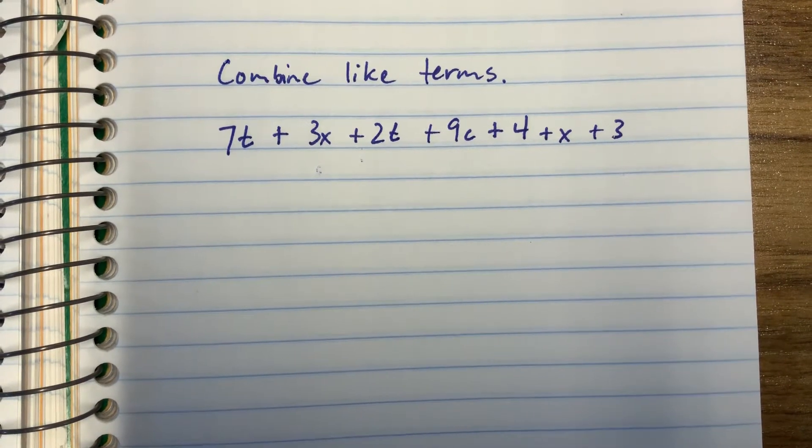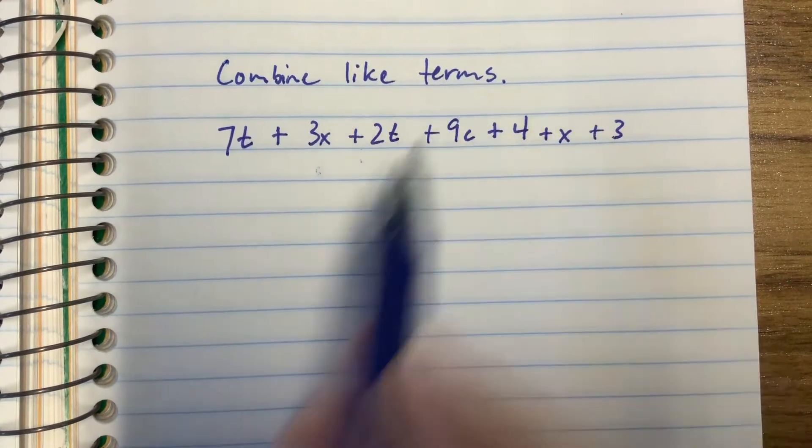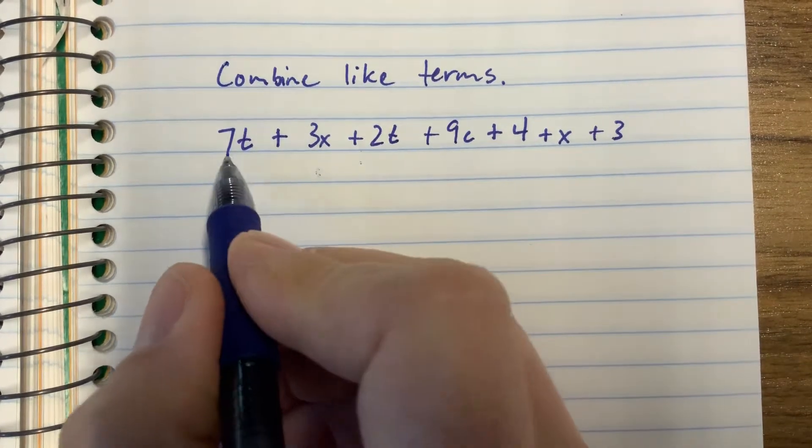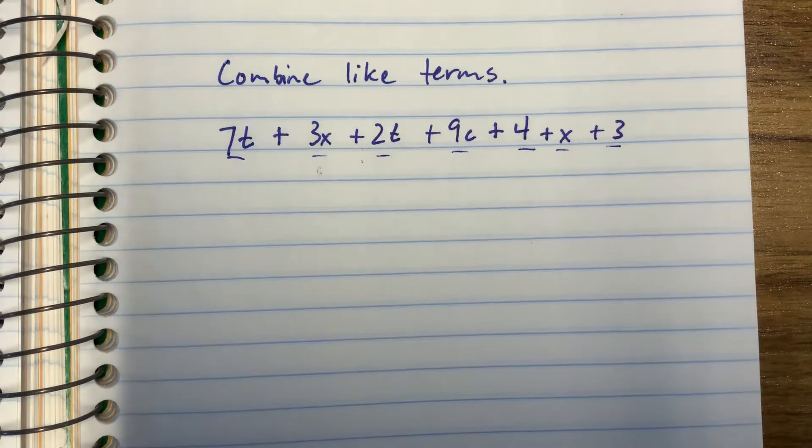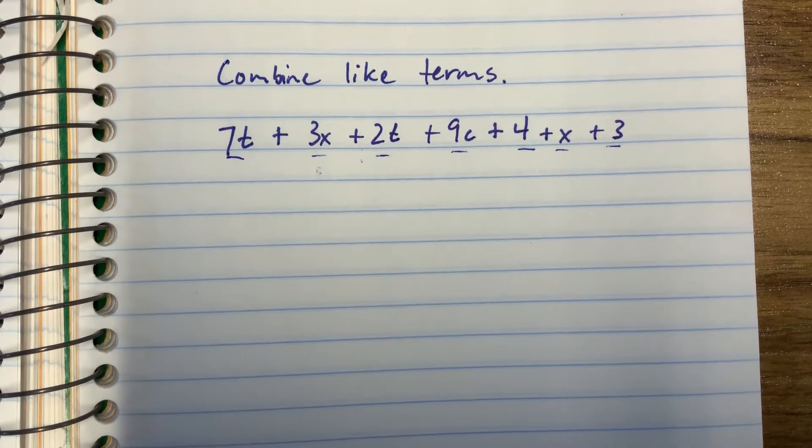All right, we have a lot of terms to combine. Combine like terms. So we've got 1, 2, 3, 4, 5, 6, 7 terms here, and we have to combine the ones that we can.